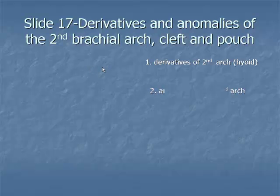Item 2. Anomalies of the second arch consist of absent or malformed auricles, commonly seen, or ossicles, and muscular asymmetry of the face.